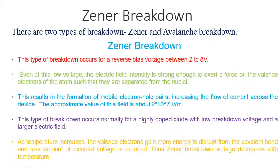The breakdown happens in two types: one is Zener breakdown and the second one is avalanche breakdown. We will see them one by one.